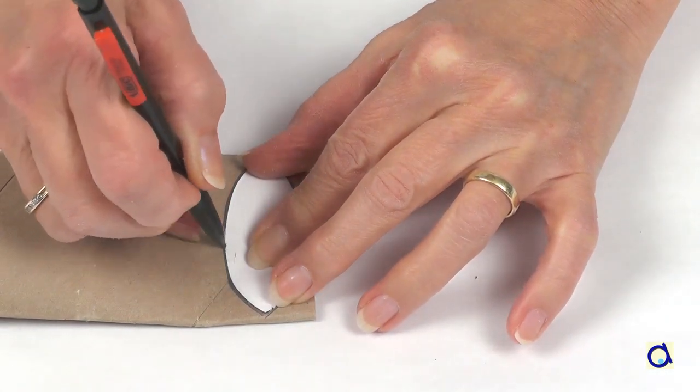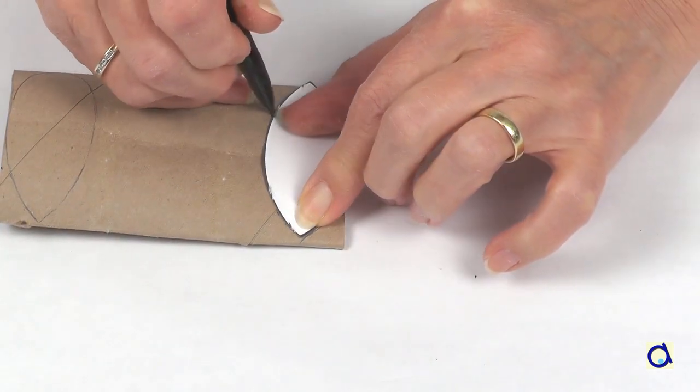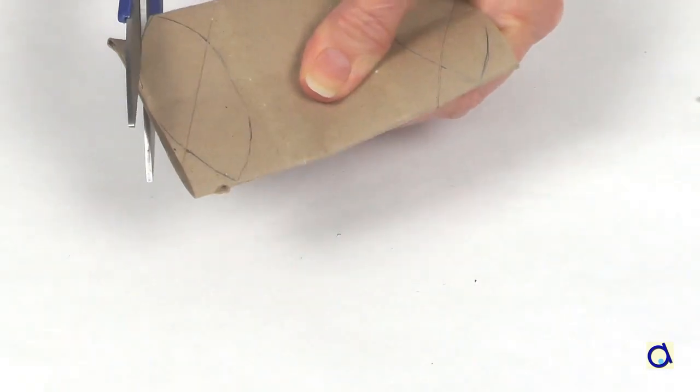Now place the pattern on the other end of the roll and proceed in the same way. Cut both ends of the roll through the two layers of cardboard to obtain a rectangle with two rounded ends.